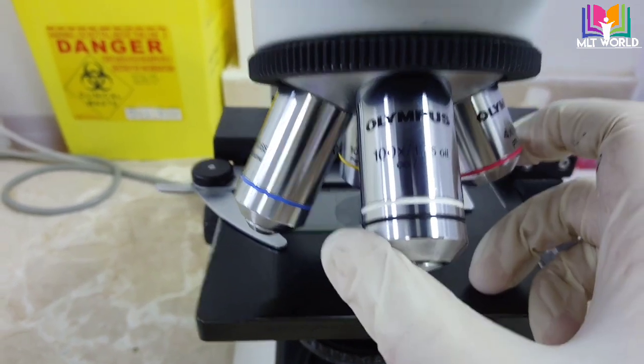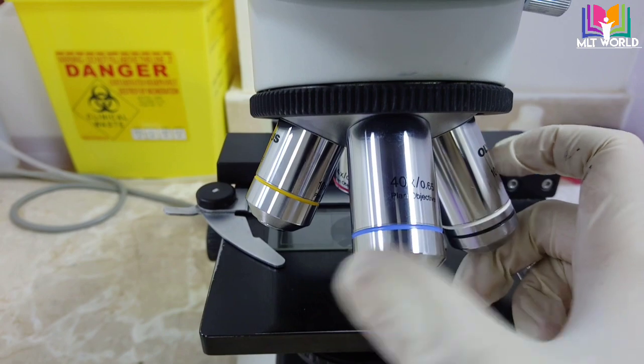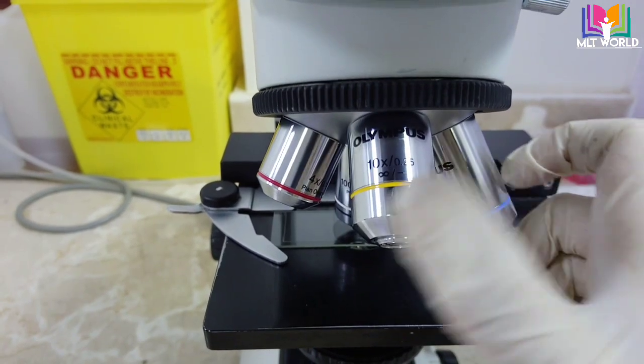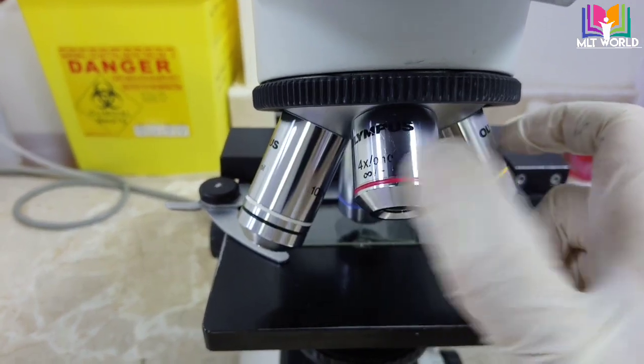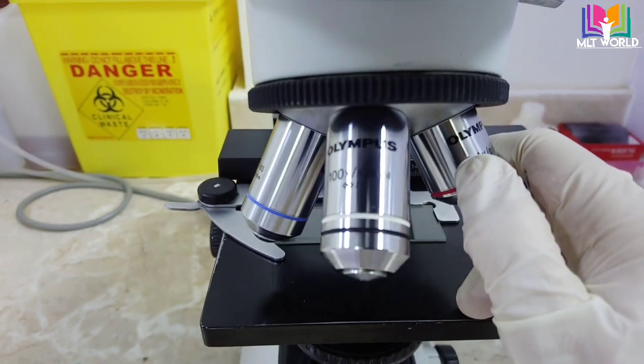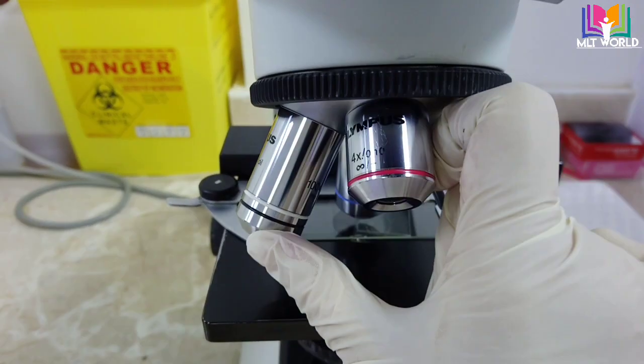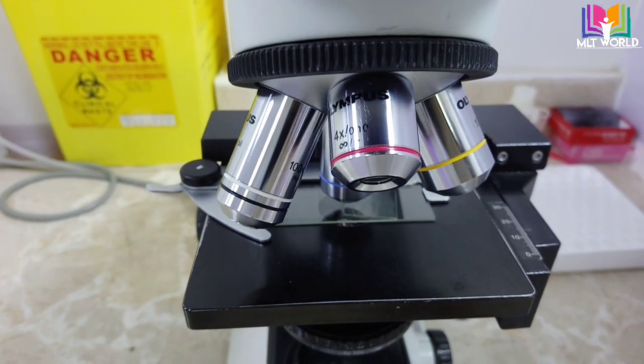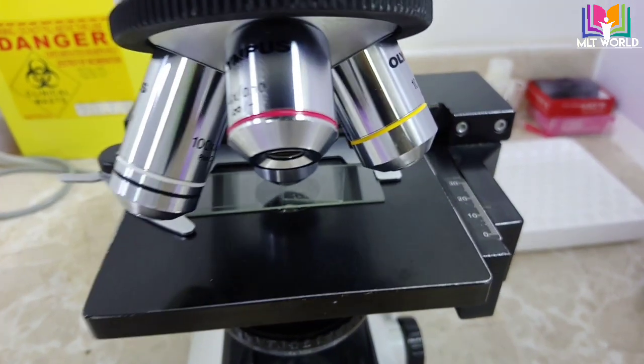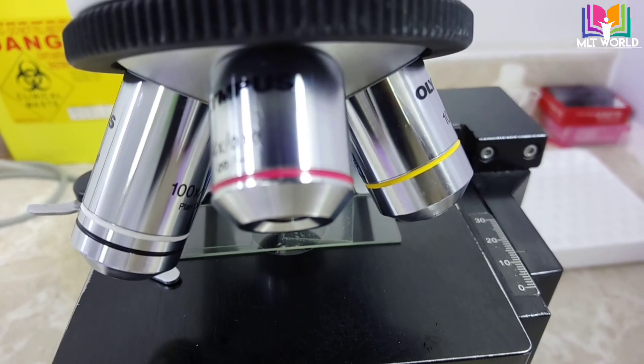When using blood smears and oil, sometimes these lenses become dirty if we have more workload. I will show you how easily we can clean the lens of the microscope. In routine microscopy, we use 10x lens, 40x lens, and 100x lens for oil immersion.